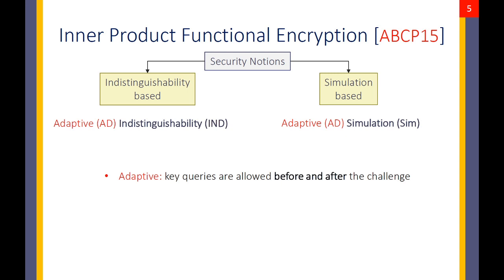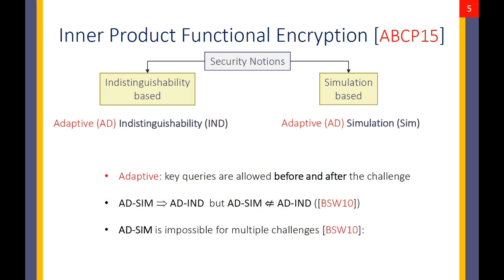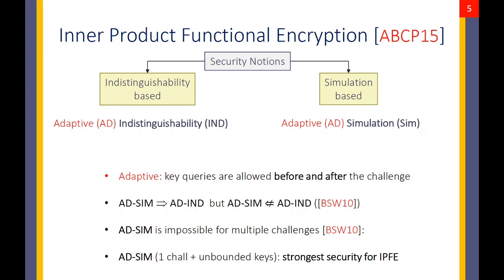Both definitions are adaptive in the sense that key queries are allowed before and after the challenge. One important observation is that adaptive simulation security is strictly stronger than adaptive indistinguishability, so adaptive simulation is to be preferred. In 2010, Boneh, Sahai and Waters showed that adaptive simulation is actually impossible for multiple challenges. Therefore the definition we discussed is the strongest possible security definition for this primitive.